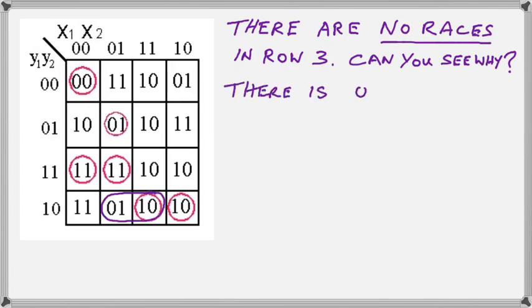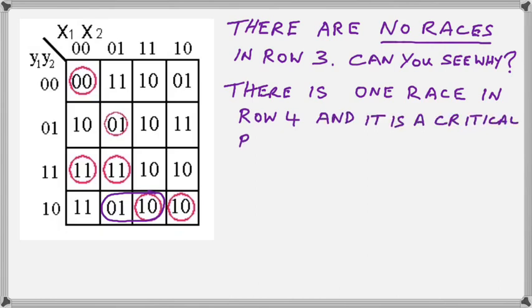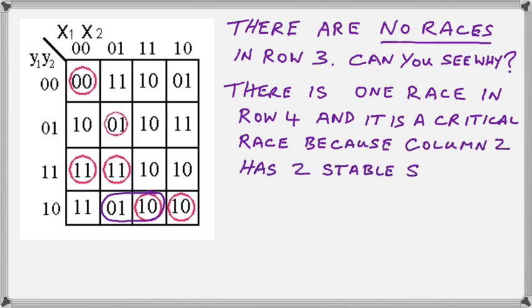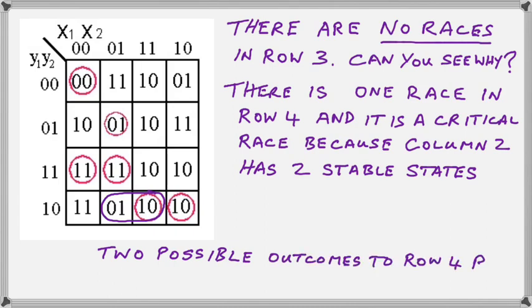Now, in row 4, we have one race. Even though we have two stable states, we only have one race. And it is a critical race. Because when we move to the left, from column 3 to column 2, there are two different possible outcomes of that race. Two possible outcomes will always mean that the race is critical.